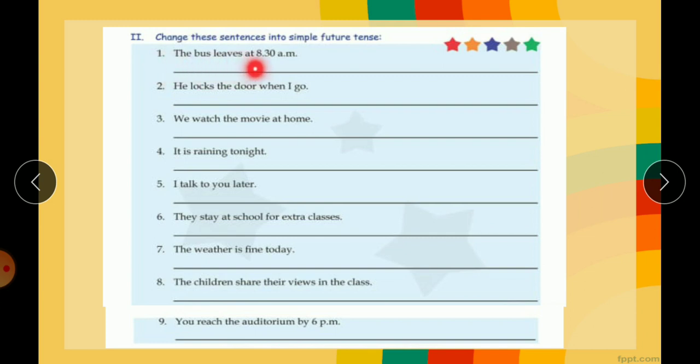The bus leaves at 8:30. Now leaves is the verb but you have to use the root form only. So you have to change it into leave, and before leave you have to put will. So the bus will leave at 8:30 am.